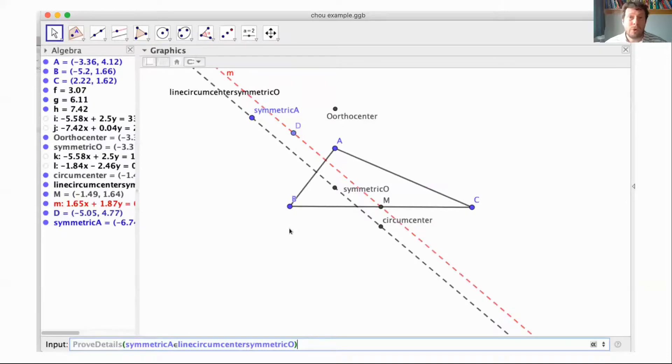The fourth approach: we make a new construction placing D on the red line. Let symmetric A be the symmetric of A with respect to D, where D is any point on this red line. In this case, symmetric A is aligned with the circumcenter and symmetric orthocenter. The answer is yes, GeoGebra can prove this.